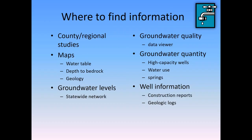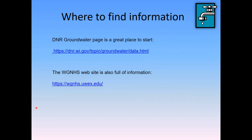One of the main things Christina wanted me to cover is how to find information about groundwater. There are many sources, but the main ones cover county or regional studies, maps of the water table and depth to bedrock, geology maps, groundwater levels, groundwater quality, groundwater quantity, high-capacity wells, and information about specific wells. Two good places to start are the DNR groundwater page and our WGNHS website at wgnhs.uwex.edu.